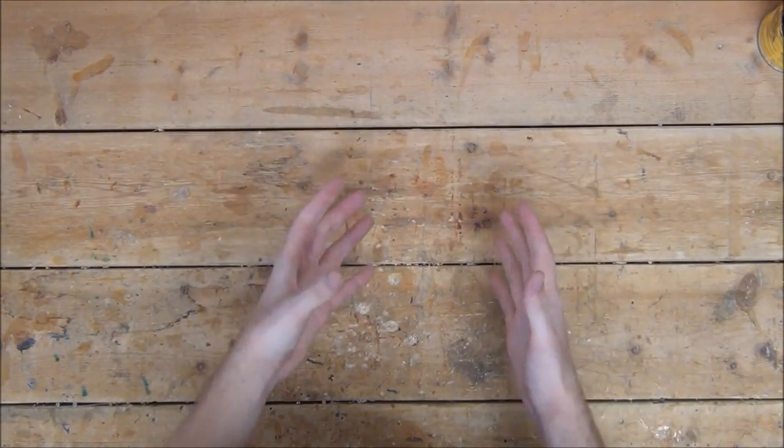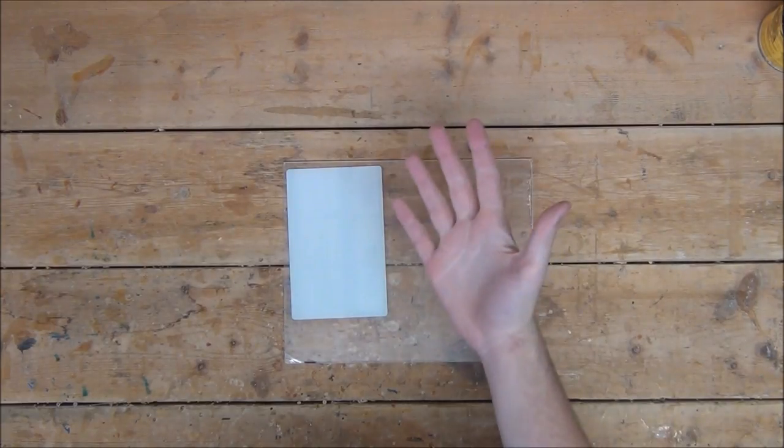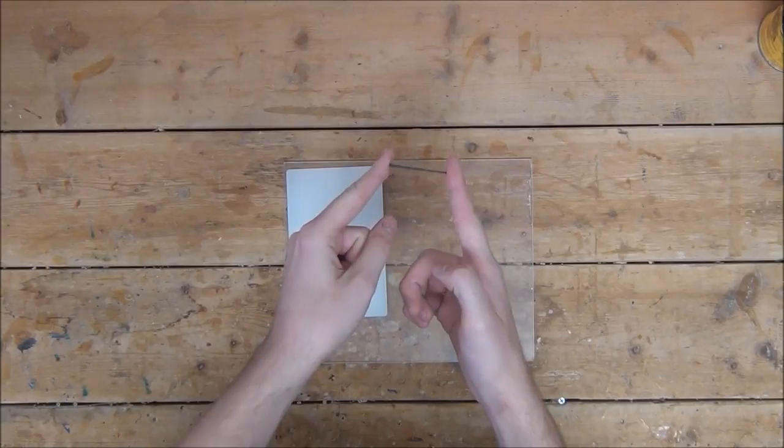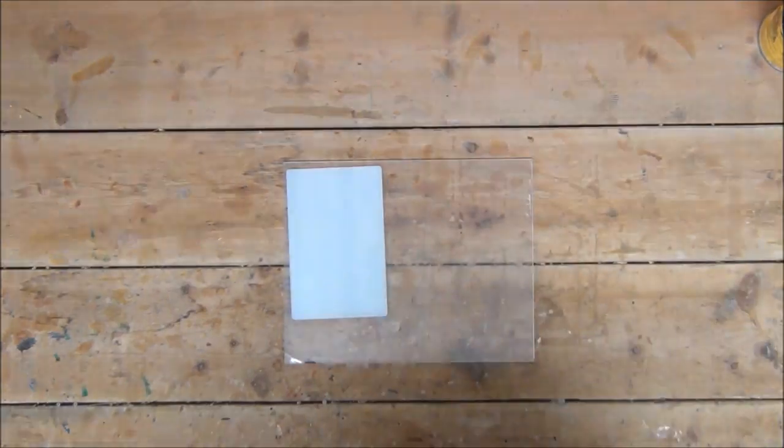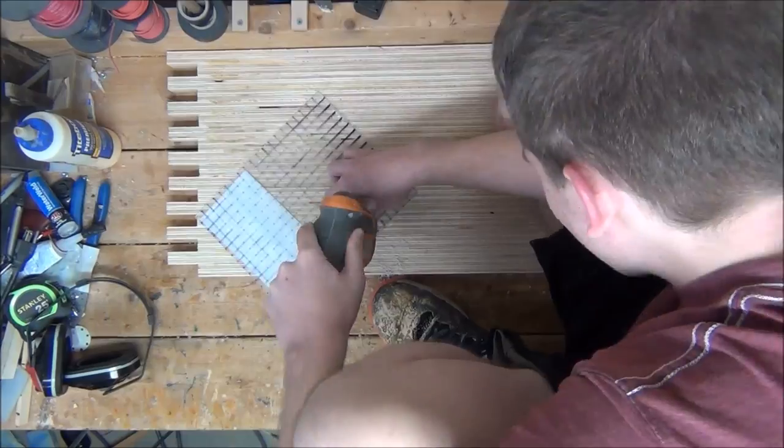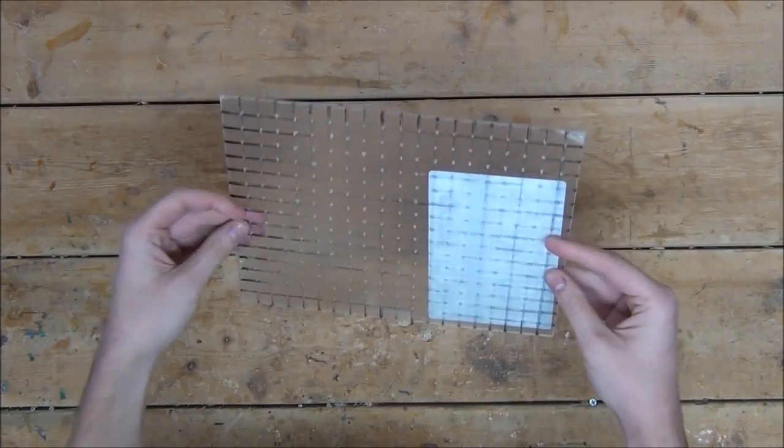While we give that some time to dry, we can temporarily switch our attention back to the plexiglass. What we're going to want to do is first take about a 1 16th drill bit and drill holes all the way through the sheet about a half inch apart. I find it easiest to draw a grid first. Just like this.